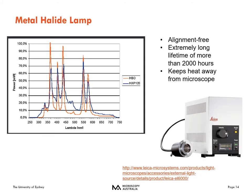More popular now is the metal halide lamp. It has a very similar spectrum to the mercury lamp, but is a little bit nicer because it typically has a light fiber guide making alignment trivial. It has an extremely long lifetime — more than 2,000 hours. It keeps heat away from the microscope and has a shorter warm-up and cool-down time of about five to ten minutes.